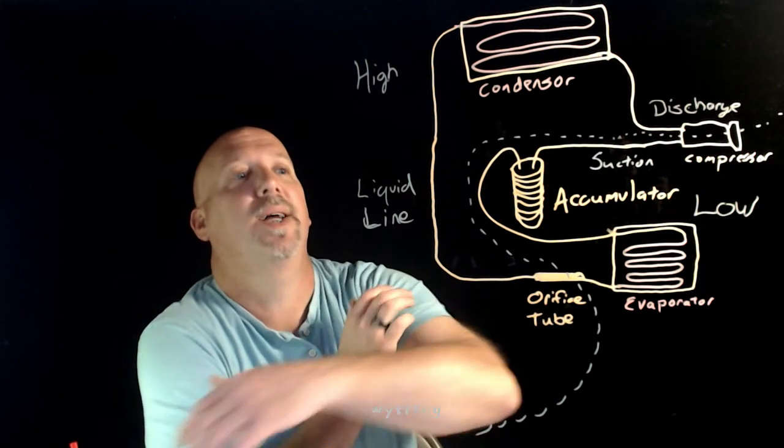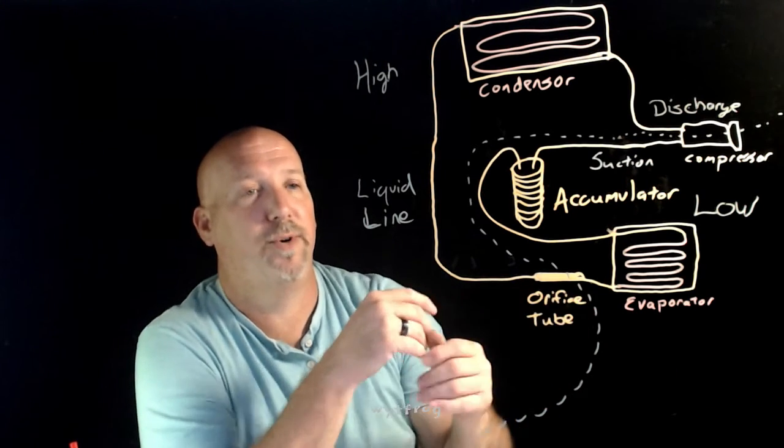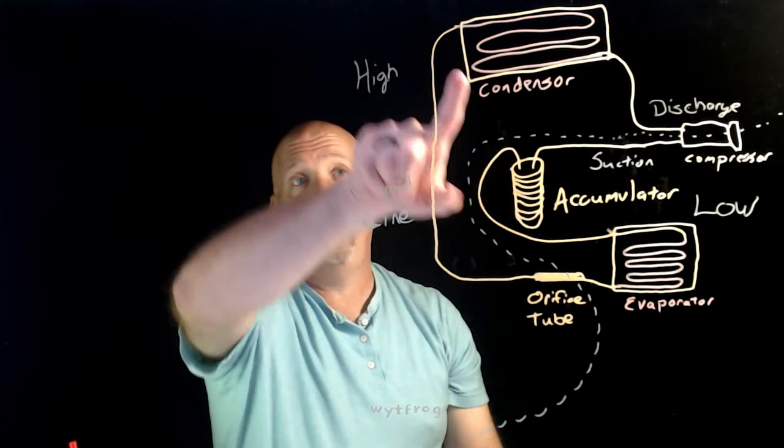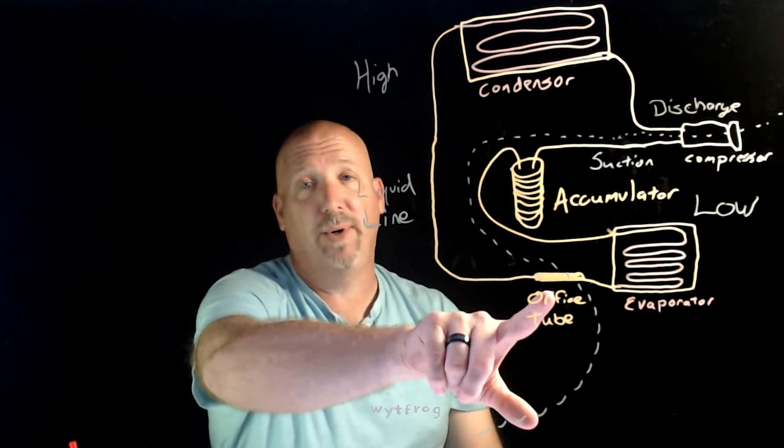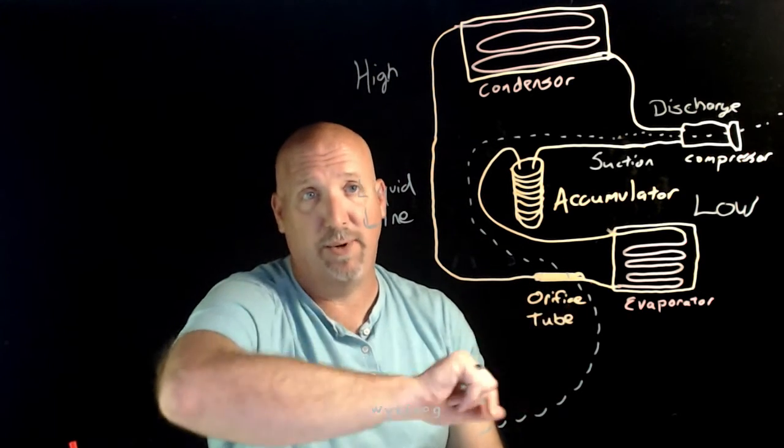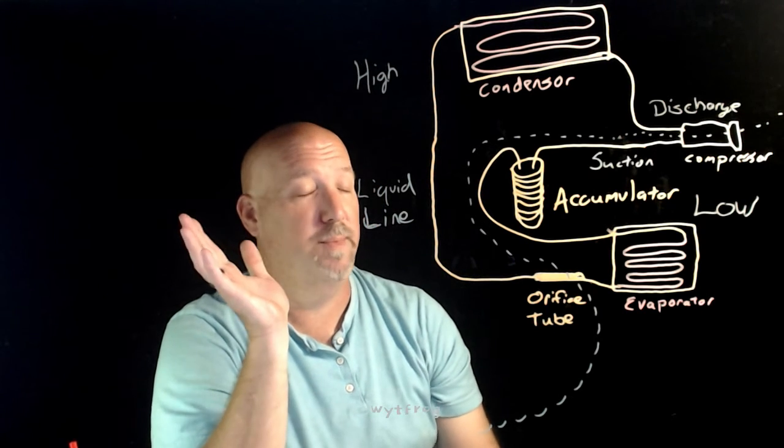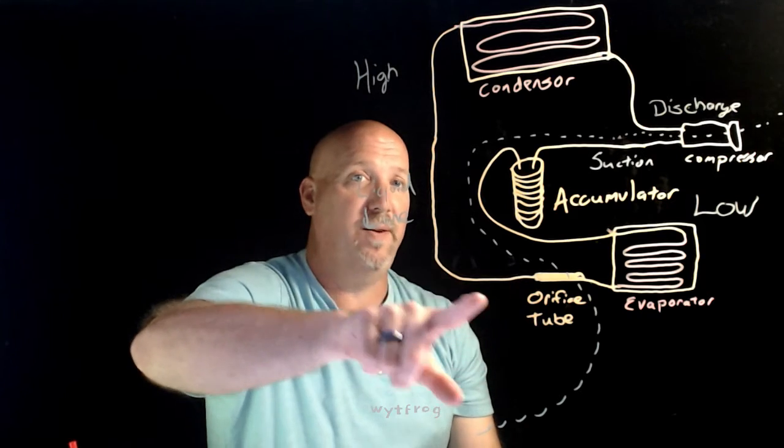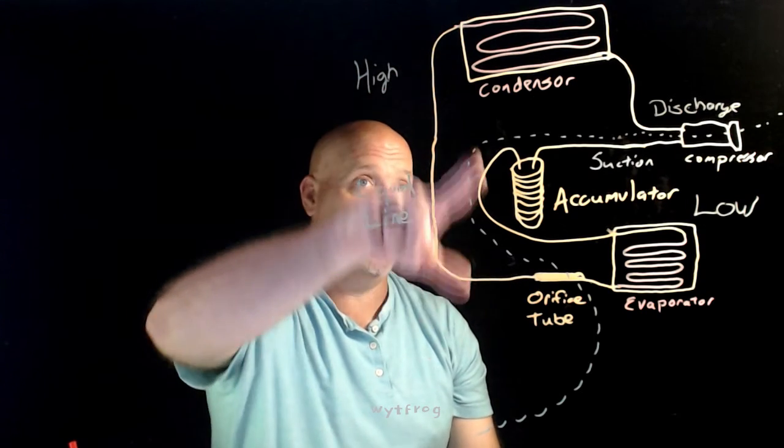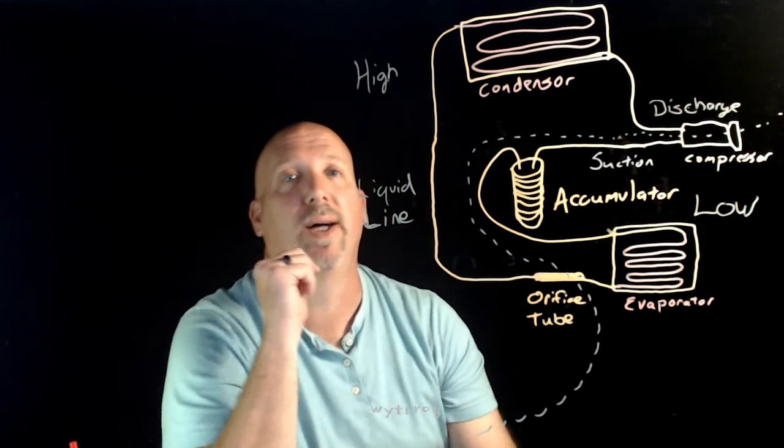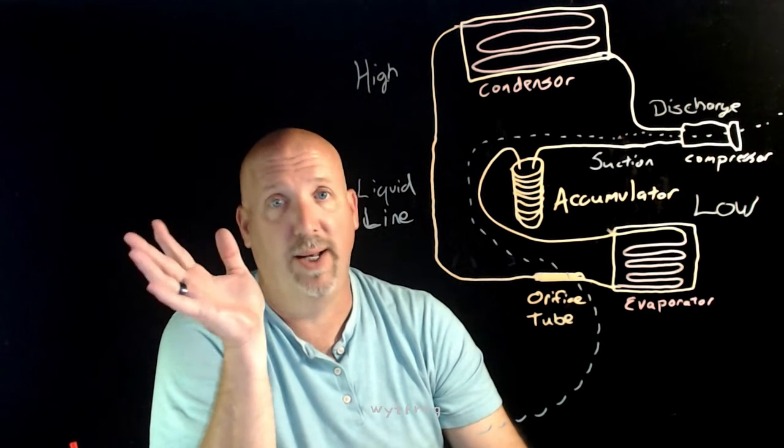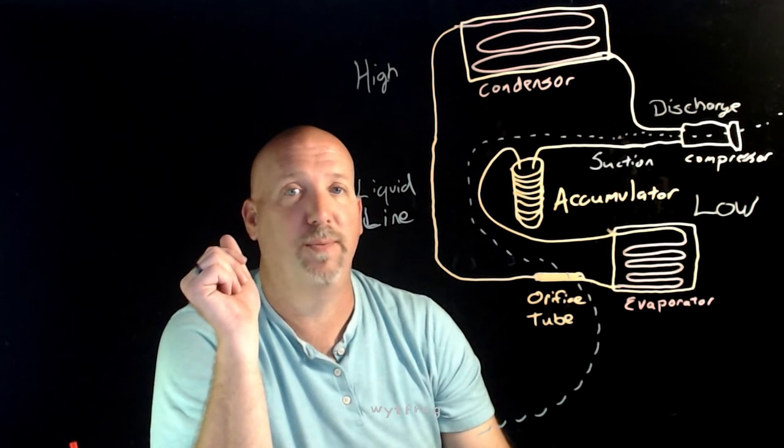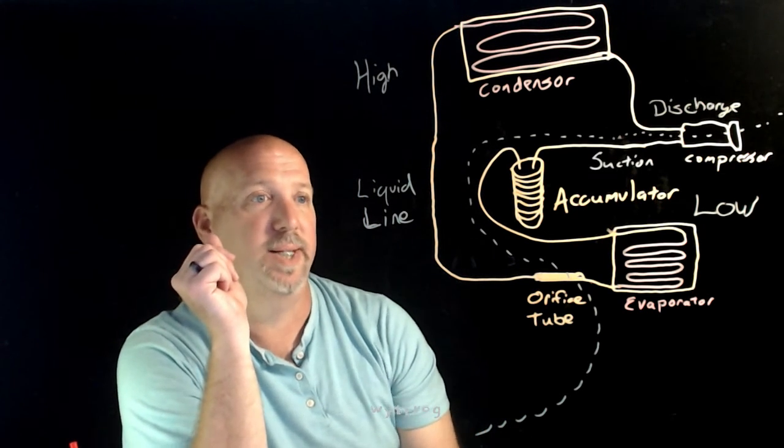The orifice tube is actually small enough to go inside the liquid line at the evaporator. The orifice tube can be either at the condenser outlet or the evaporator inlet, right at the evaporator inlet. Many vehicles have them here. Many have them here. I've even seen some that had them somewhere between the condenser outlet and the evaporator inlet. Anywhere in that line is great, and it just all depends on how the engineers wanted to build that AC system.